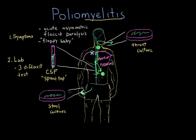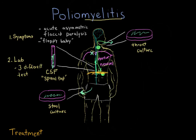Once diagnosis is made, we need to progress to treatment. Unfortunately, there is really no specific treatment for a person who has polio — it's really symptomatic support. If a patient has their respiratory muscles, like the diaphragm, become dysfunctional and they can't breathe, then they might need support through a breathing tube placed into the mouth to support the lungs.